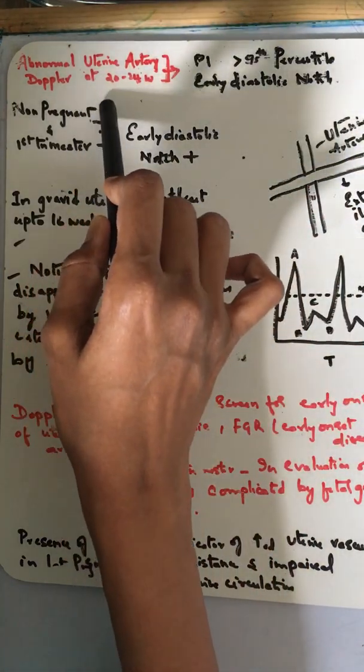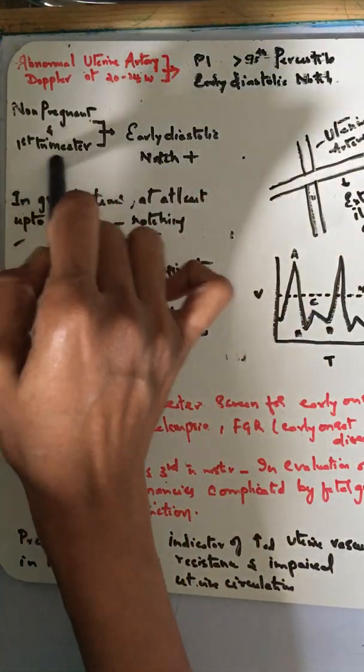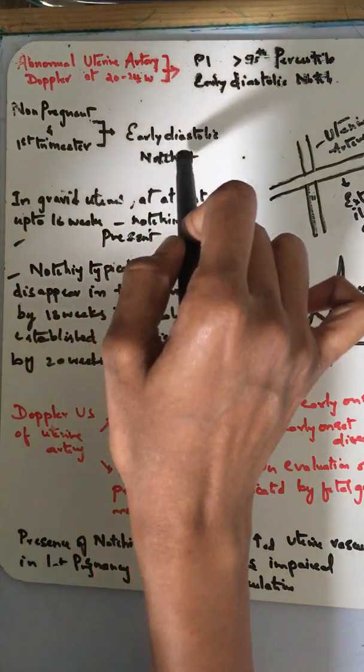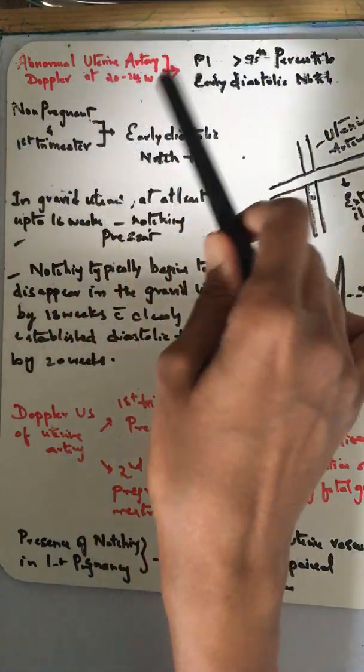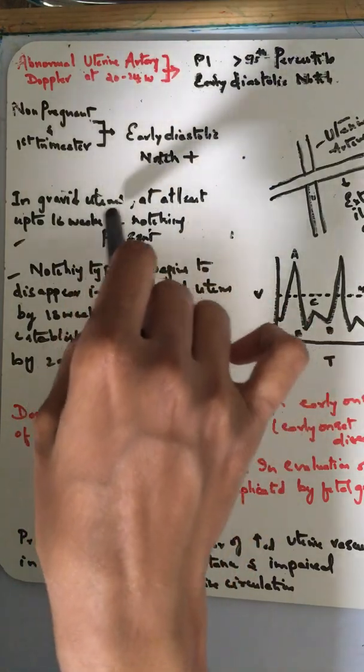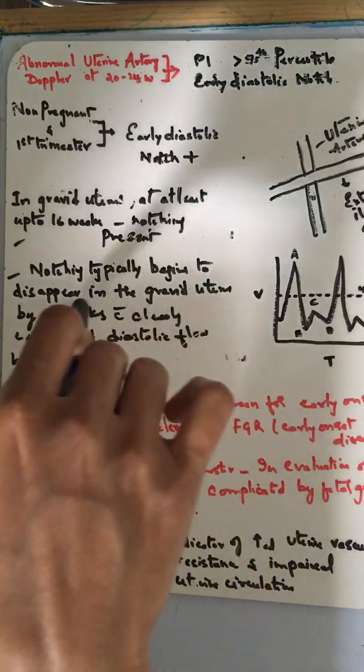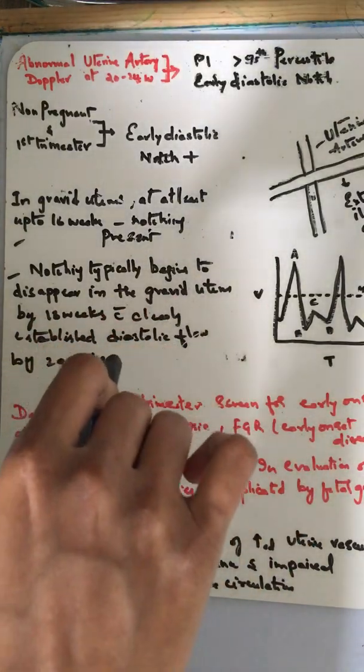In the non-pregnant uterus and patients in the first trimester, there will be a notch. In first trimester patients, the remodeling has just started and is not complete—that's why there will be a notch. Normally in the gravid uterus, notching will be present at least up to 15 weeks. Notching typically begins to disappear by 13 weeks with clearly established diastolic flow by 20 weeks.